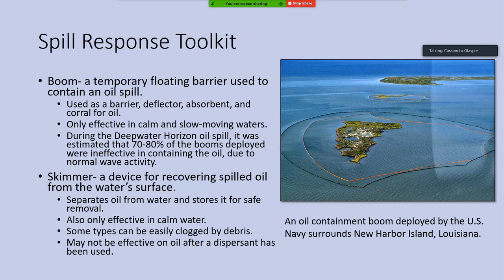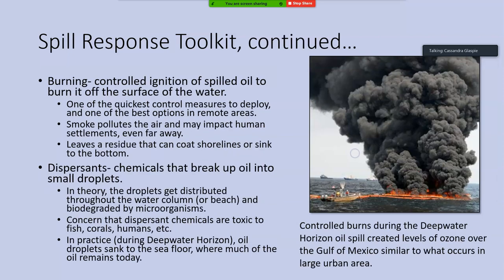Booms have a downside in that they're only effective in calm and slow-moving waters — they work well in something like a lake but not in the Gulf of Mexico, where waves are rarely under about three feet, which is about the limit for boom effectiveness. During the Deepwater Horizon oil spill, it was estimated that 70 to 80 percent of the booms deployed were ineffective in containing the oil because the waves were too strong — and that was just normal wave activity in the Gulf of Mexico.